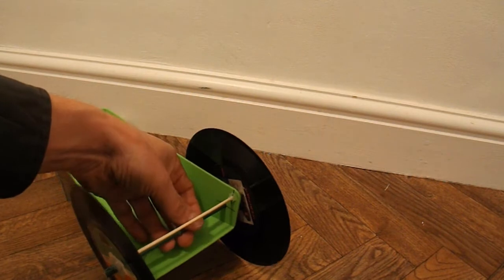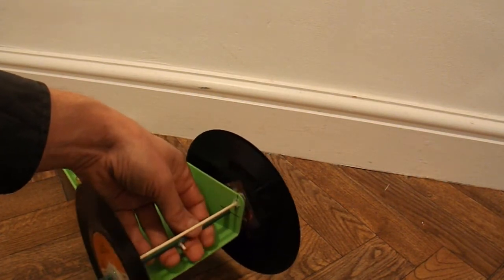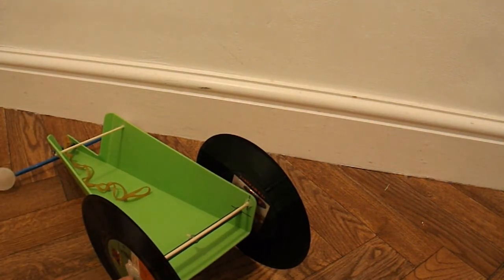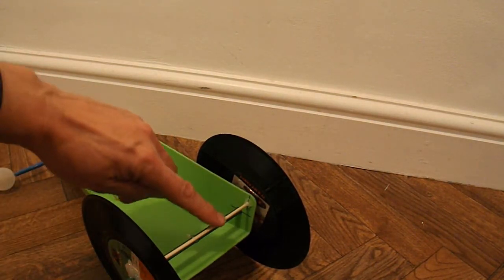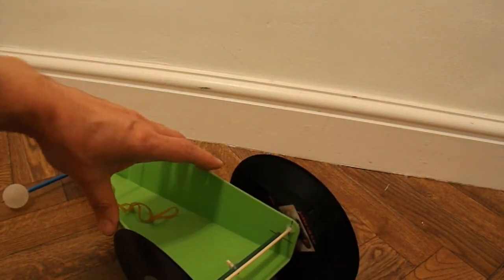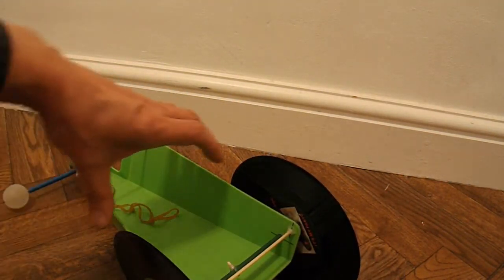The axle at the back is a garden cane that happens to be the right thickness to go through these records. And then we've got a couple more barbecue skewers to hold the folding chopping board folded.